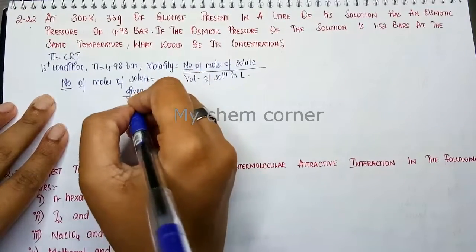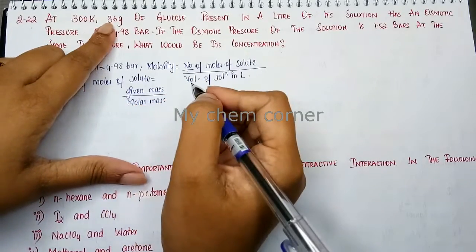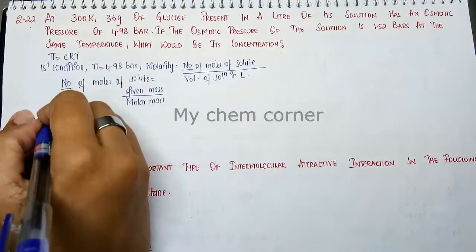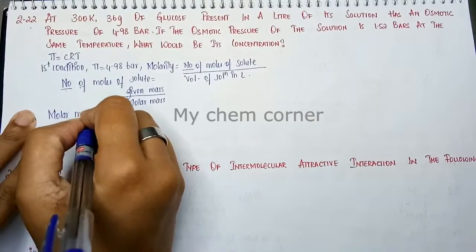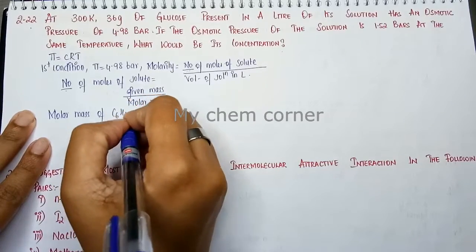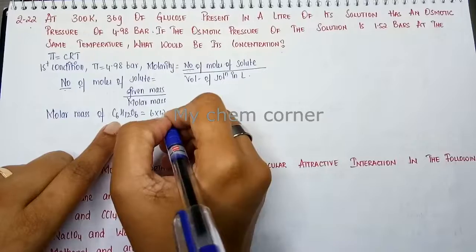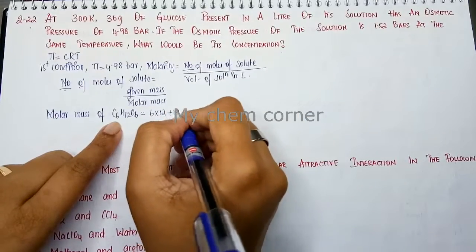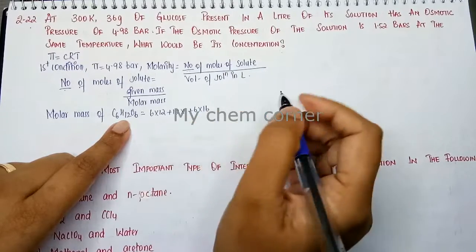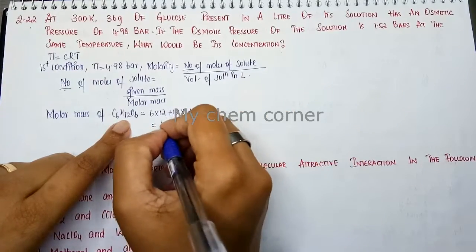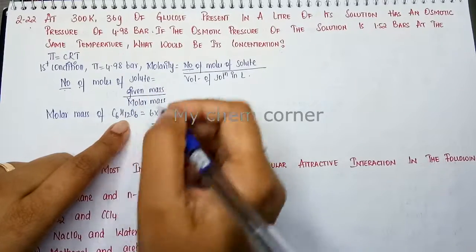The given mass of the solute is 36 grams. Now we find the molar mass of glucose. Glucose is C₆H₁₂O₆, so molar mass equals 6 × 12 (carbon) + 12 × 1 (hydrogen) + 6 × 16 (oxygen), which gives 180 grams per mole.